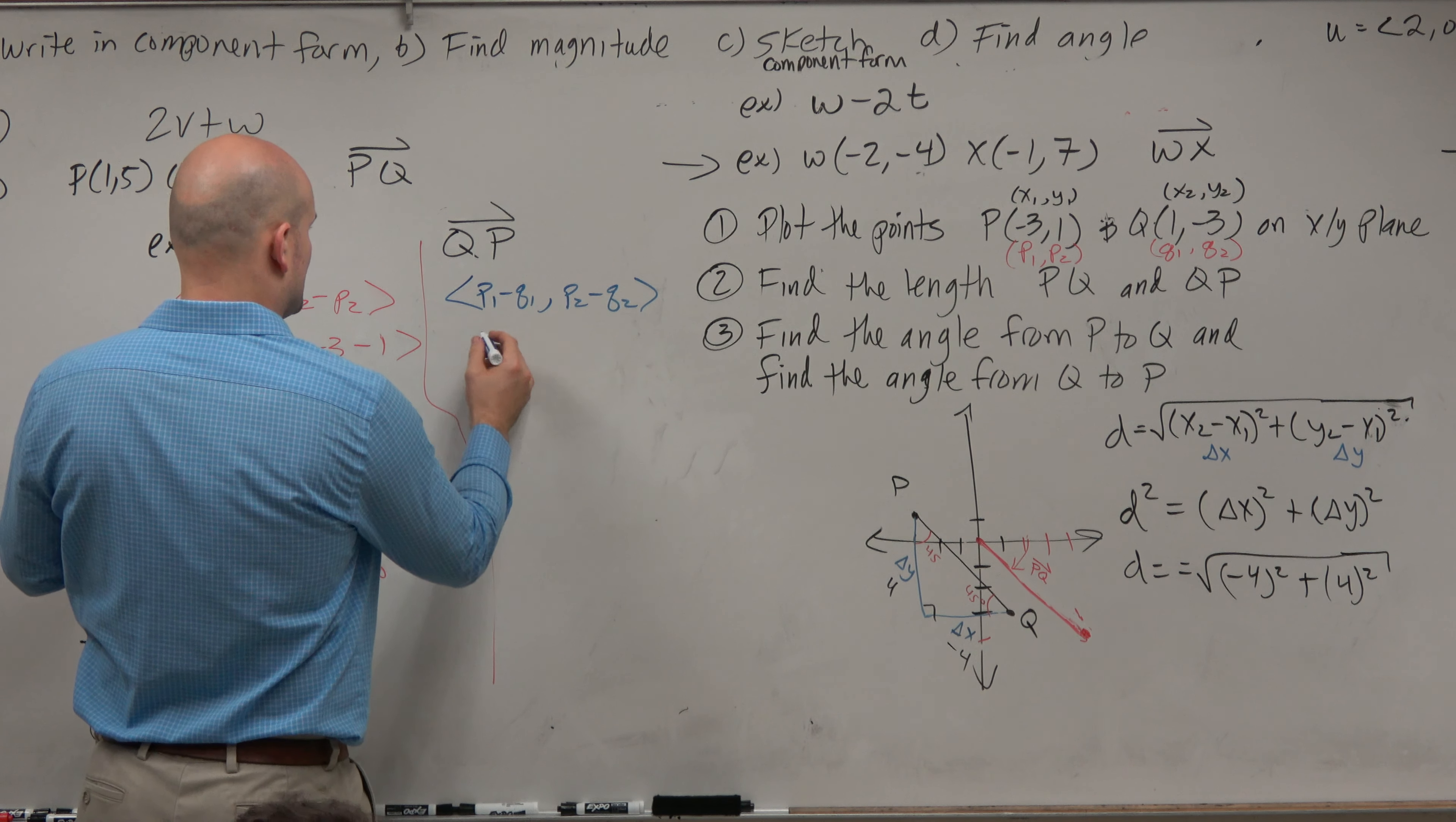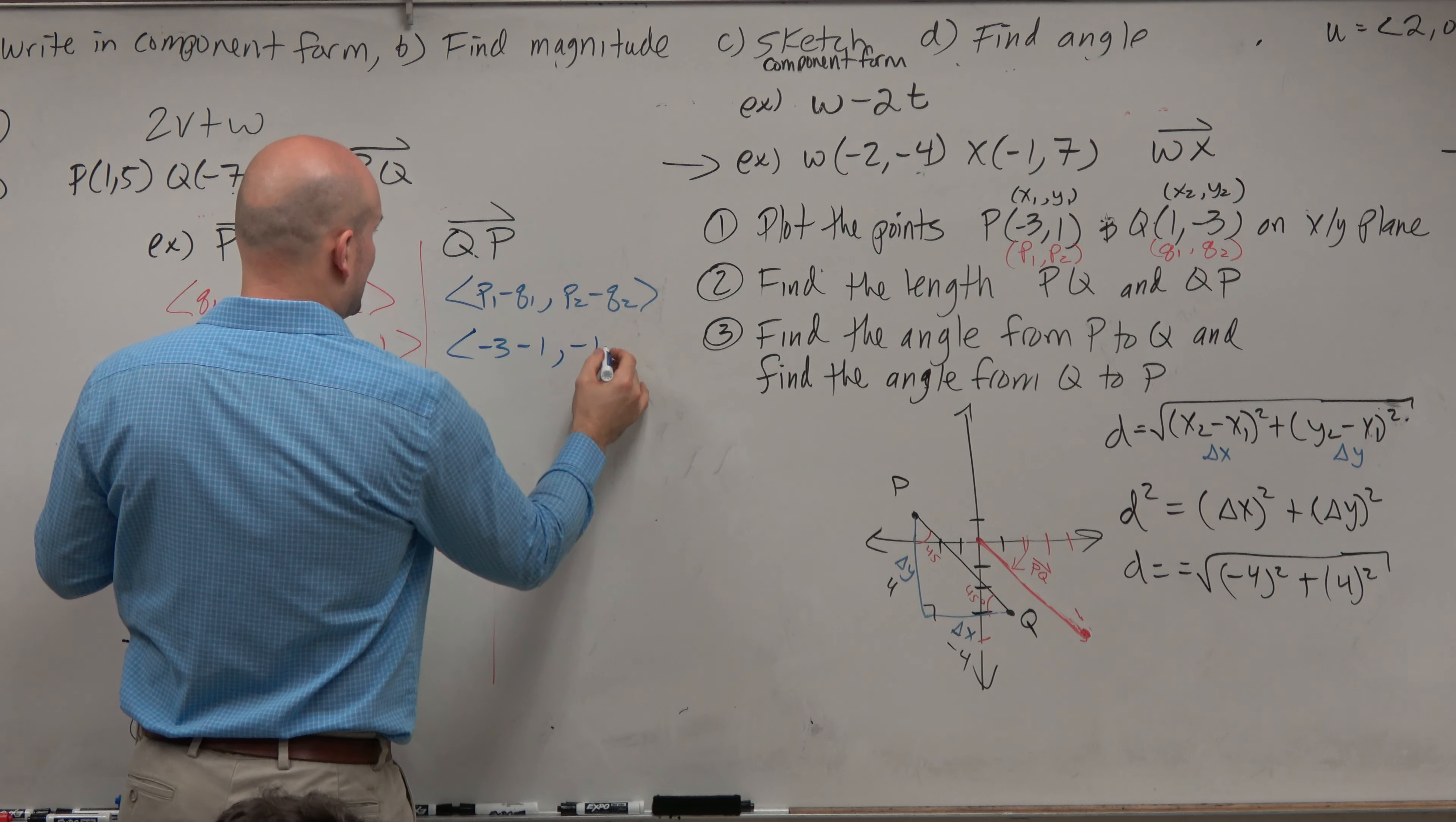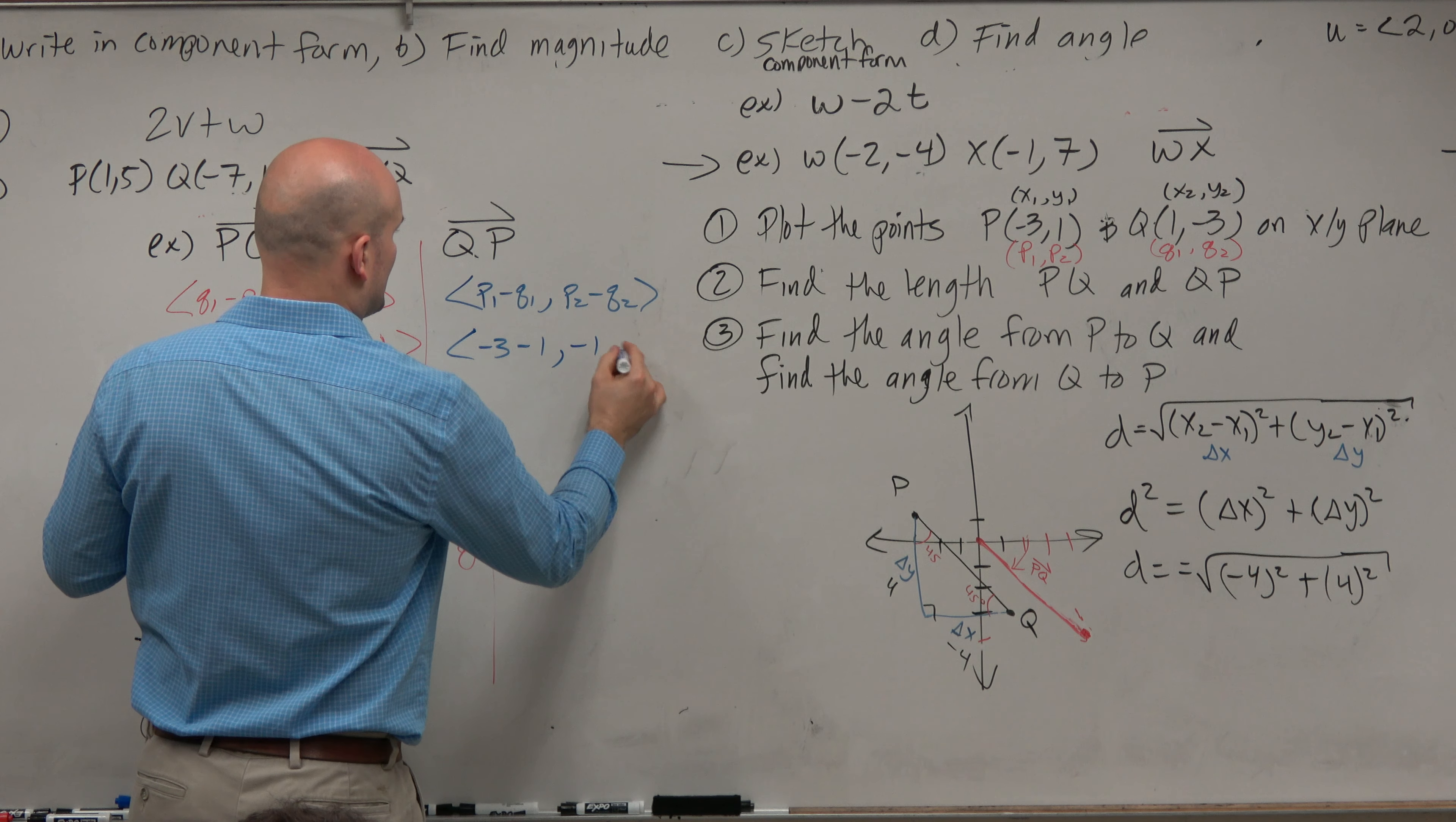So everything really kind of gets switched around. So this is really negative 3 minus 1 comma negative 1 minus 3.